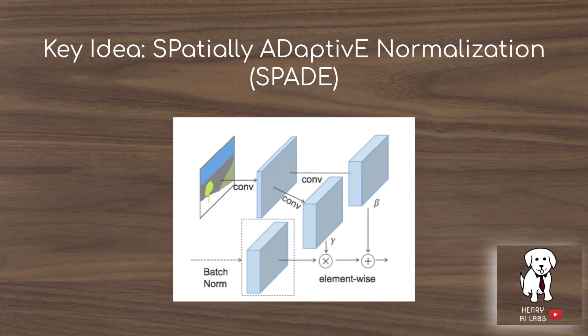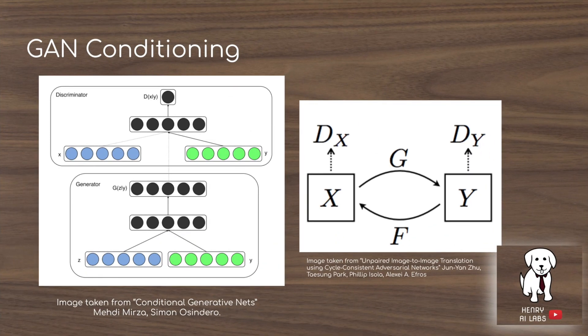The key idea for making this work is the SPADE normalization layer, derived from 'spatially adaptive.' The idea is that you take the input pixel map and map it into a feature map of the same spatial resolution as the GAN's intermediate features. We'll learn more about this throughout the presentation.